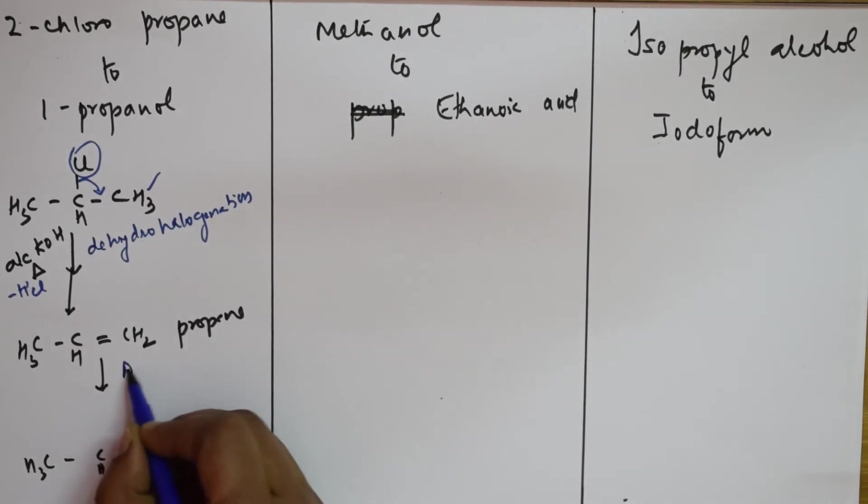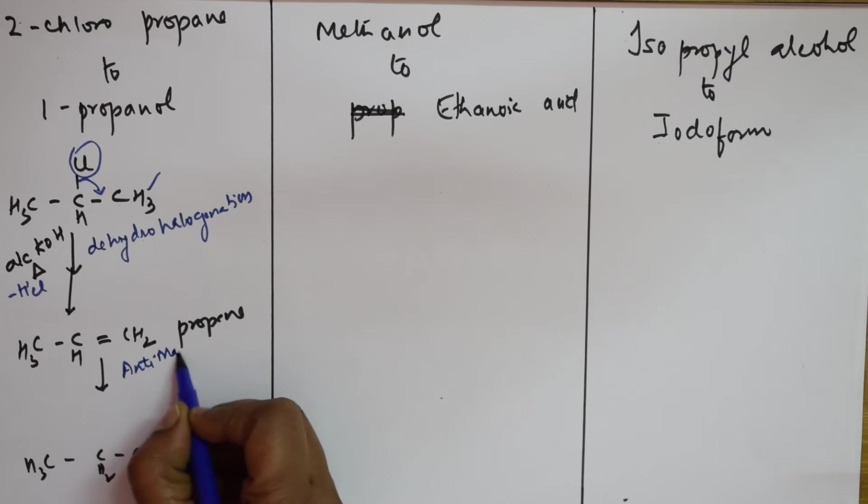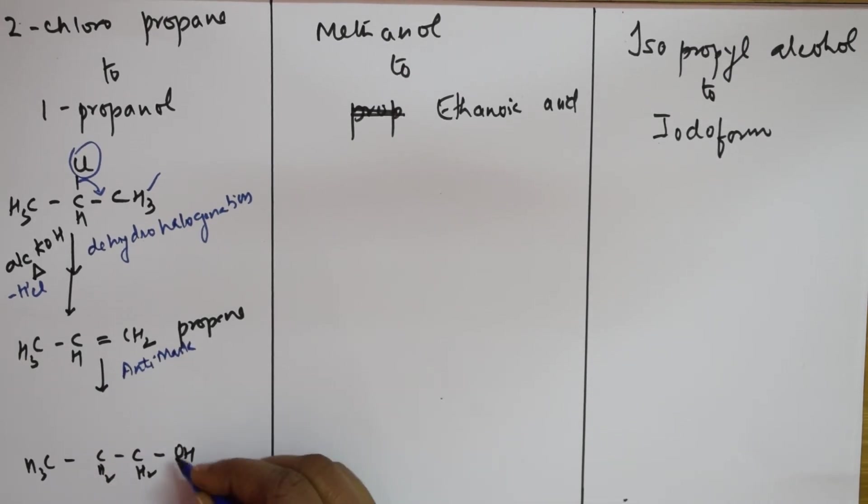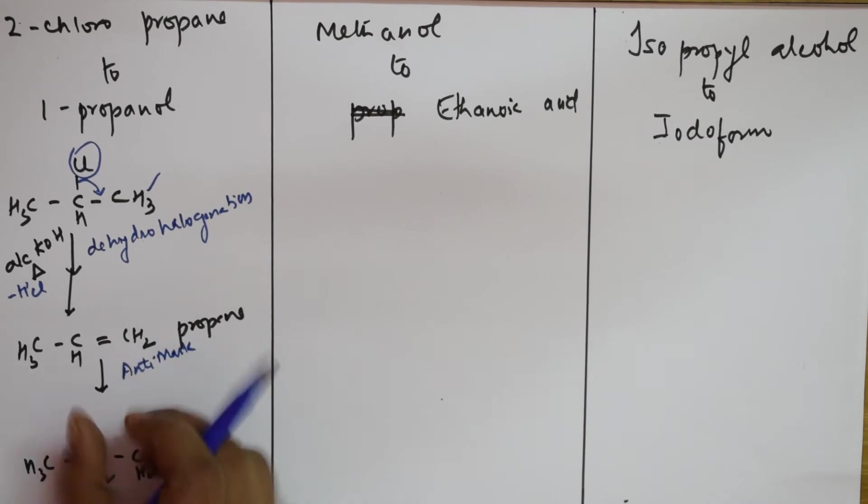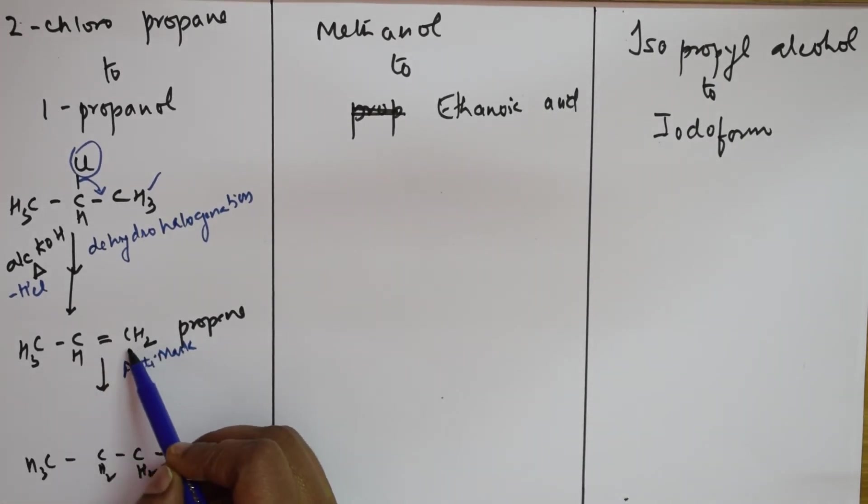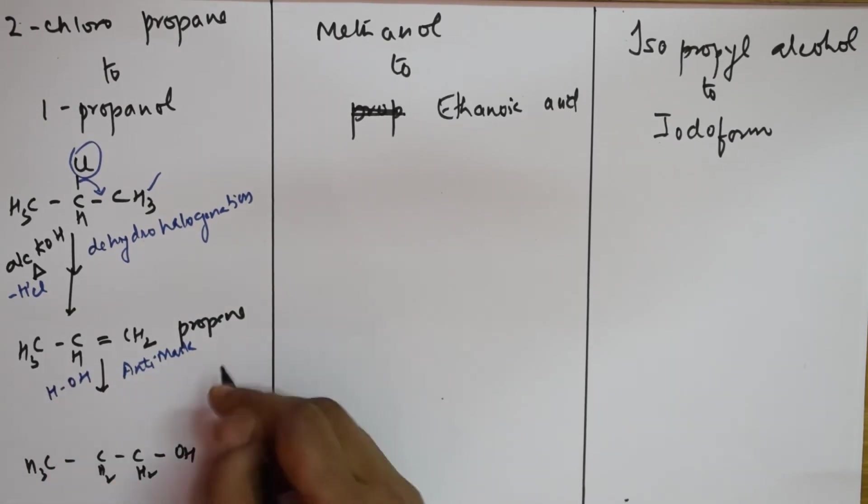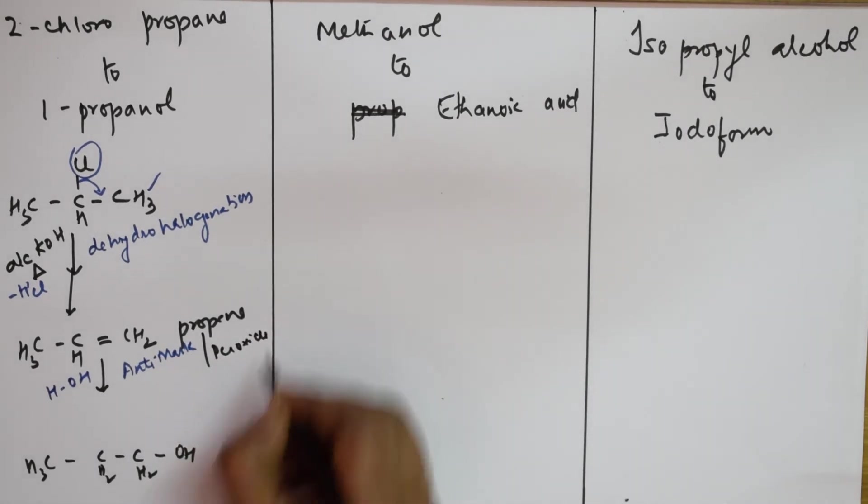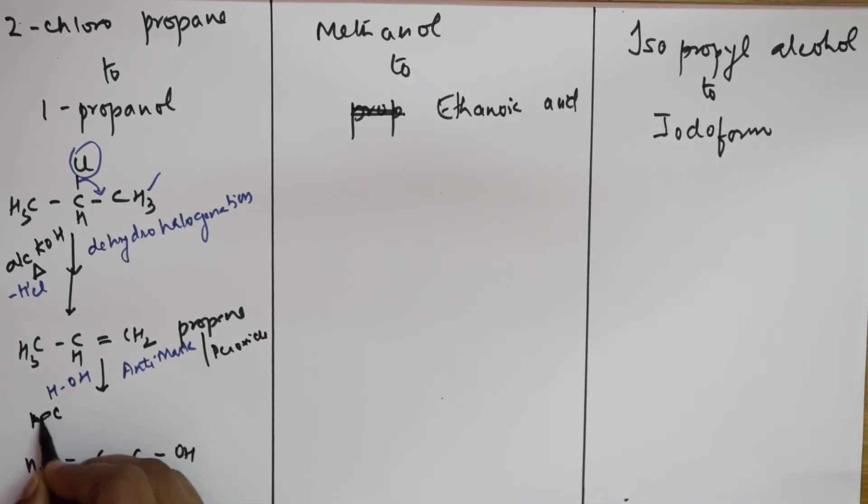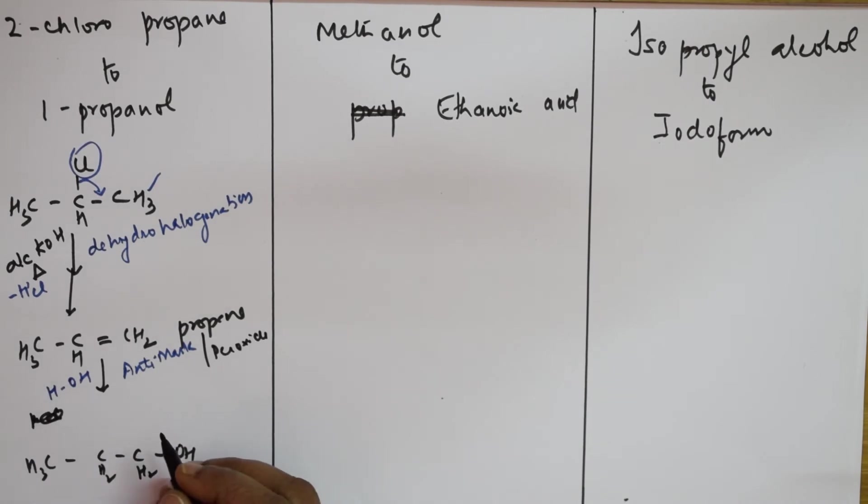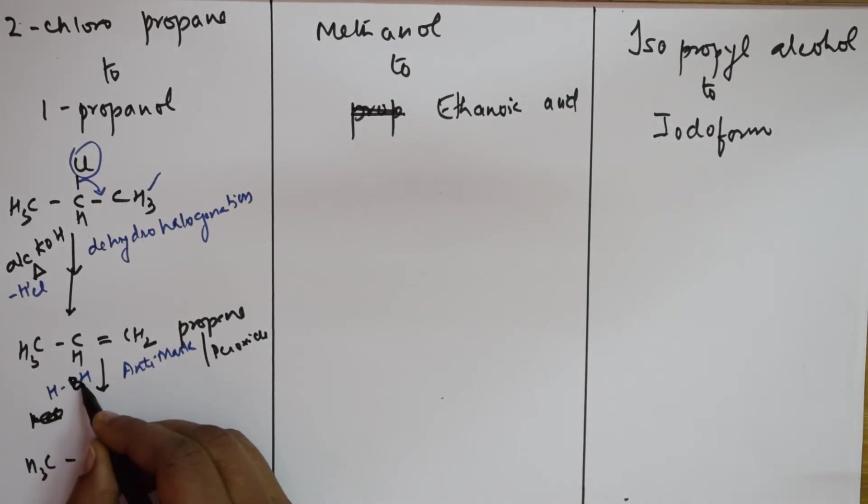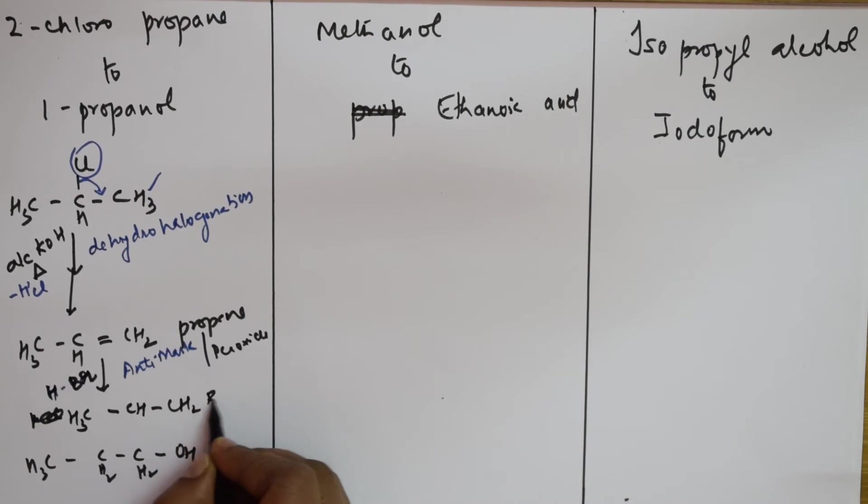Once again in anti-Markovnikov rule, we are going to get the negative addendum attached to the last carbon where it has more number of hydrogens around the double bond. This has more number of hydrogens, so the negative addendum in water goes and adds to this. Anti-Markovnikov addition in the presence of peroxide. I need to add HBr. Using anti-Markovnikov, this becomes CH2Br.